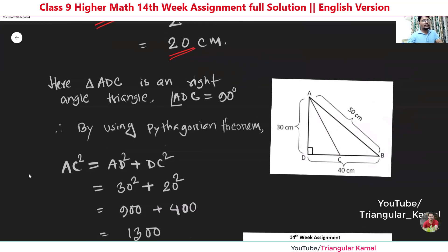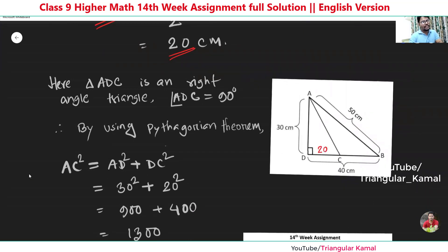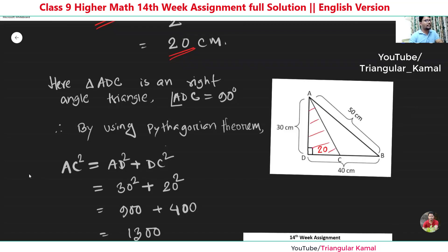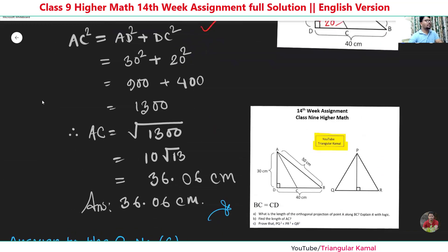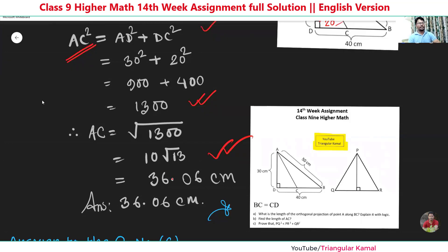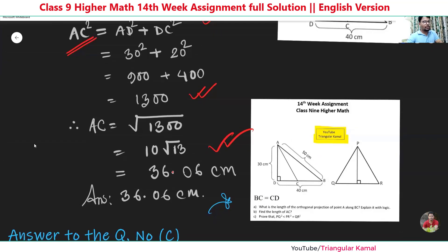In this right-angle triangle, CD is 20 centimeters and AD is 30 centimeters. Using the Pythagorean theorem: AC² = AD² + CD². Substituting the values and calculating, we get AC² = 1300. Therefore, AC = √1300 = 10√30, which is approximately 36.06 centimeters. This is our answer for question B.